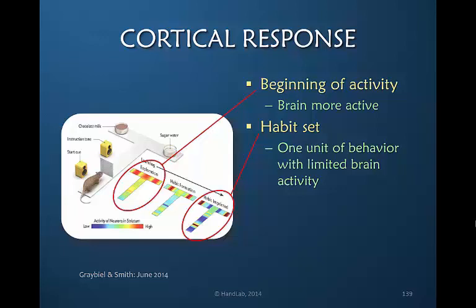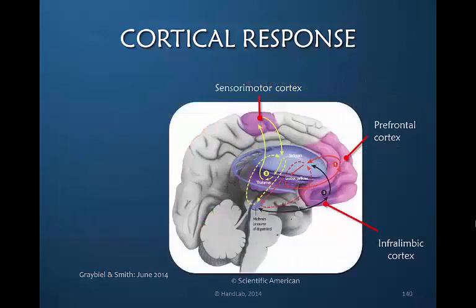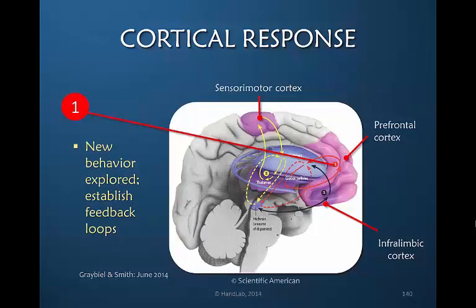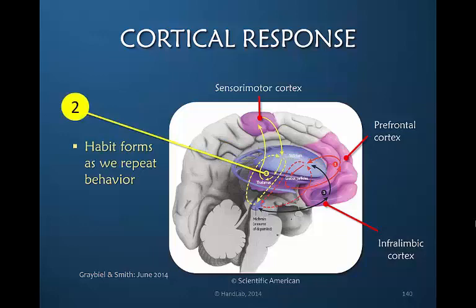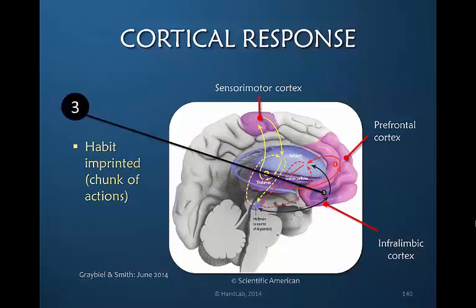Patients who develop a maladaptive pattern create the habit of movement, and they don't have to think about it — it's automatic, it is ingrained in their motor cortex. This happens very quickly, primarily because our brain is so adaptable and can change so readily based on input of movement. The first step of new behavior is to establish a feedback loop in the prefrontal cortex, and then as we repeat the habit, the habit forms, and lastly the habit is imprinted. We remember chunks or parts of the action so that it becomes automatic.